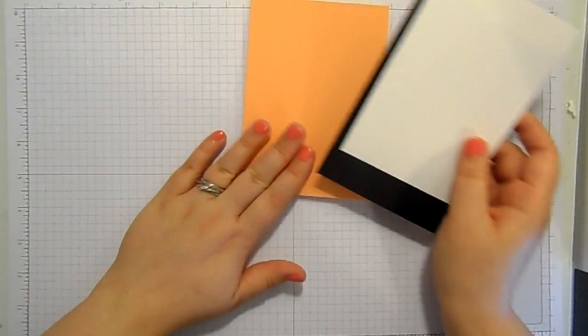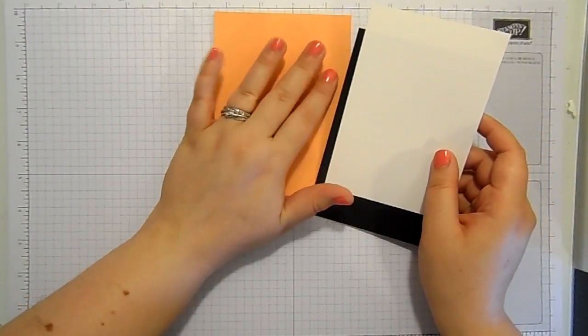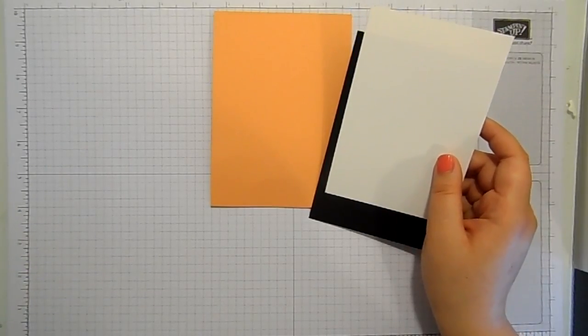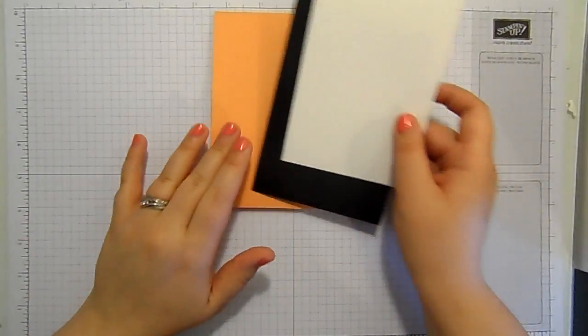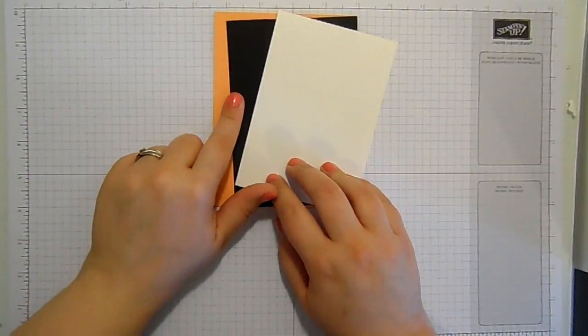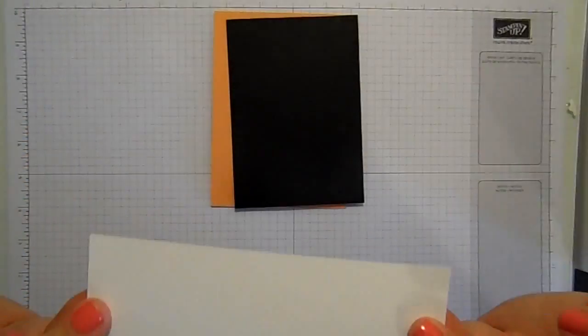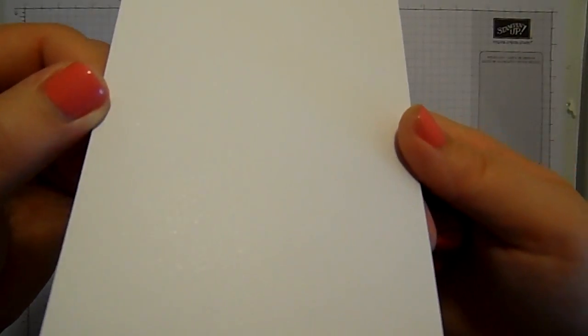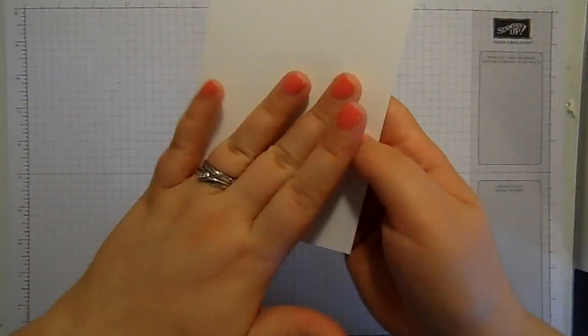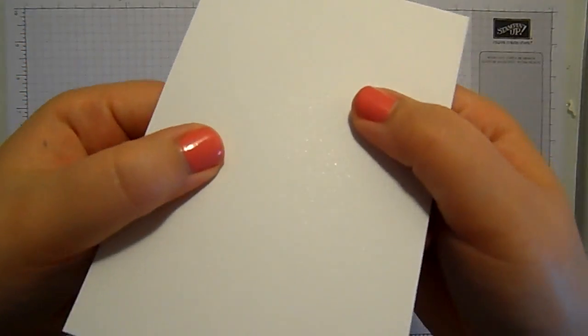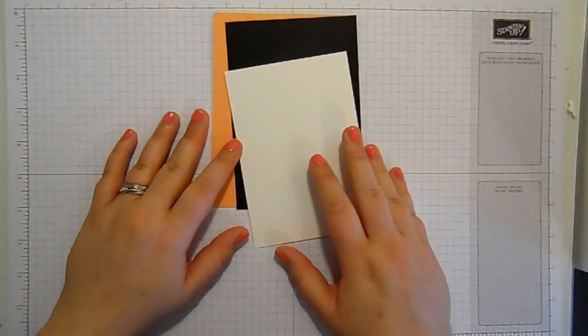I have got a Peekaboo Peach card base and mats in Basic Black and this is our sparkly paper. It's got glitter sort of embedded in it. It's completely smooth. It's great for stamping on but it's sparkly. Love that.